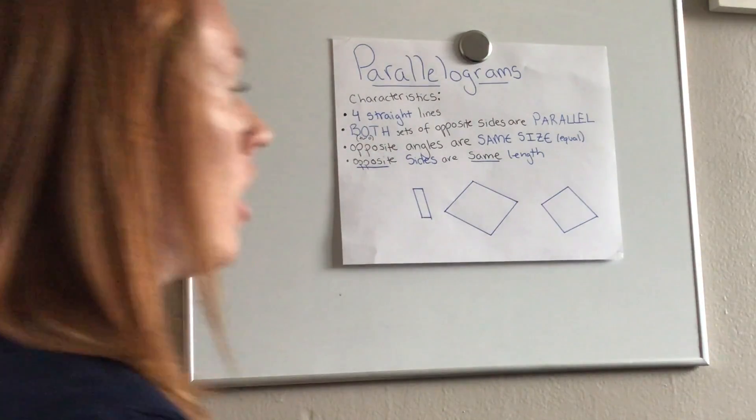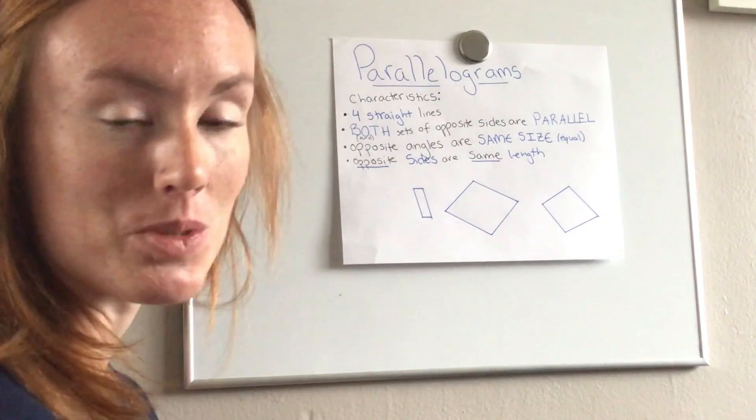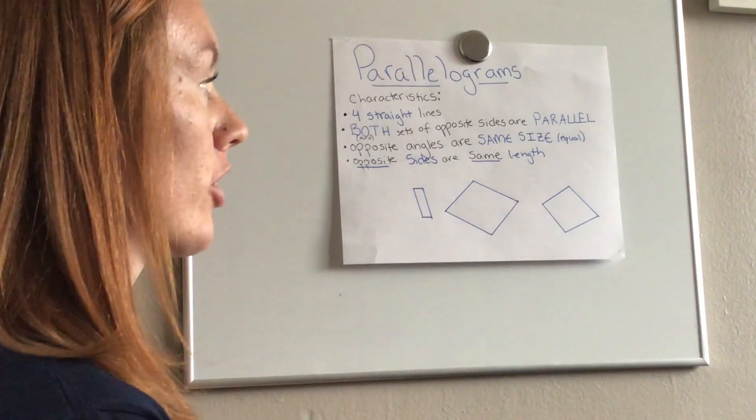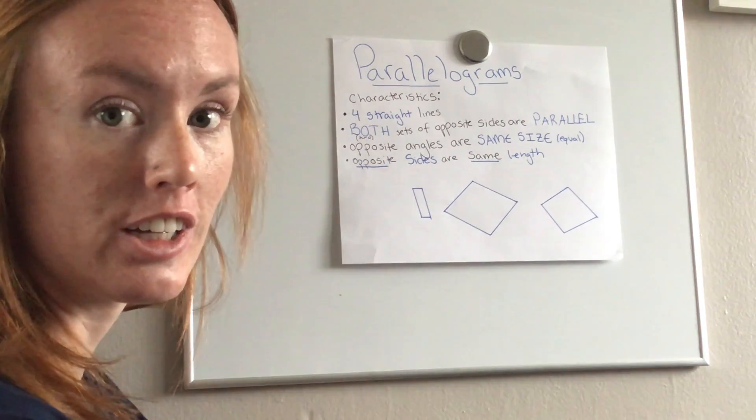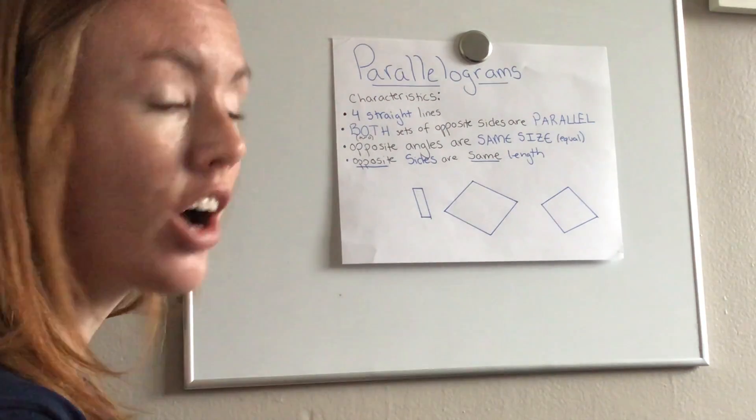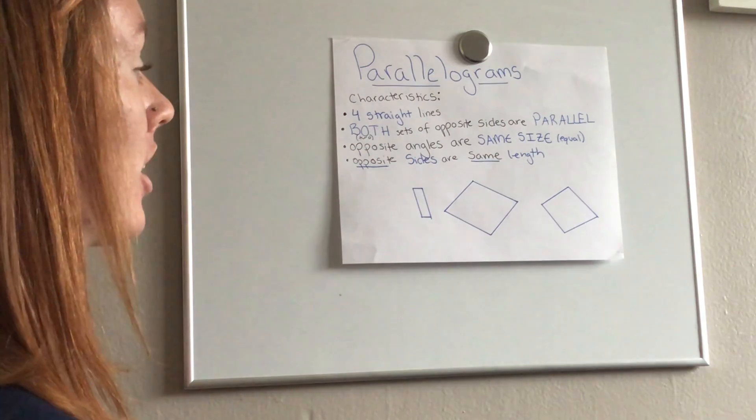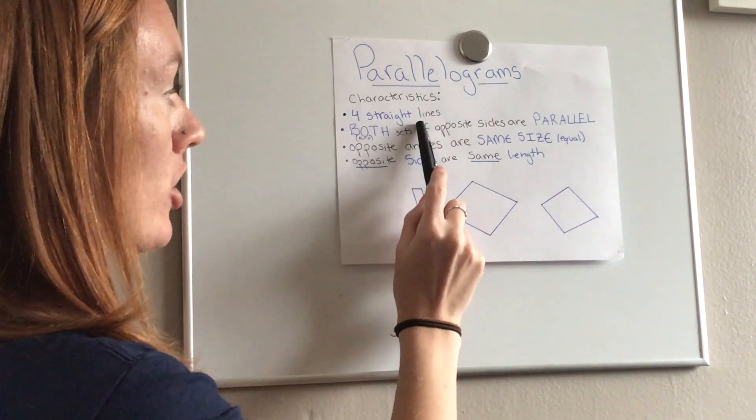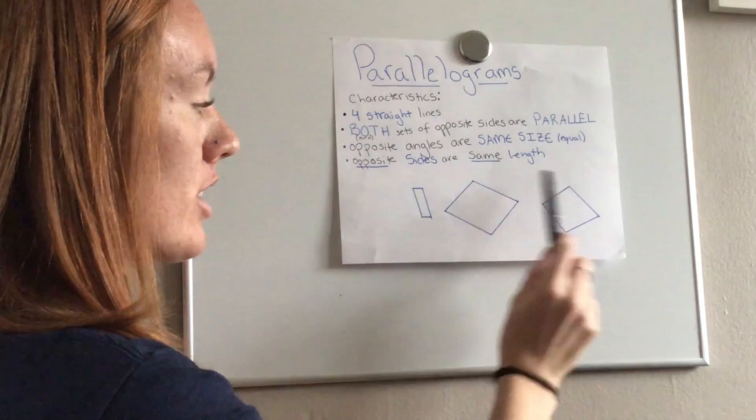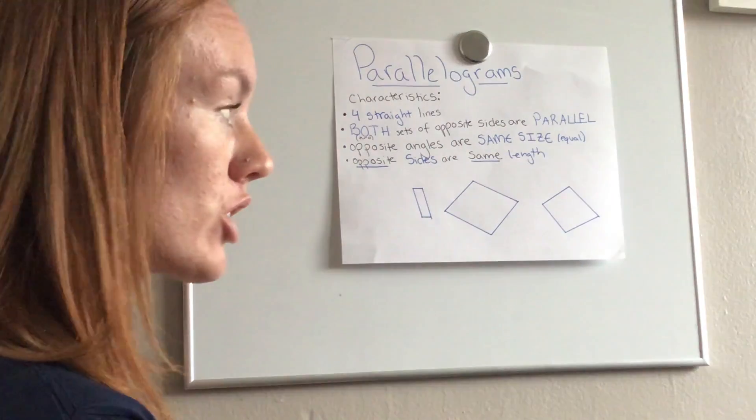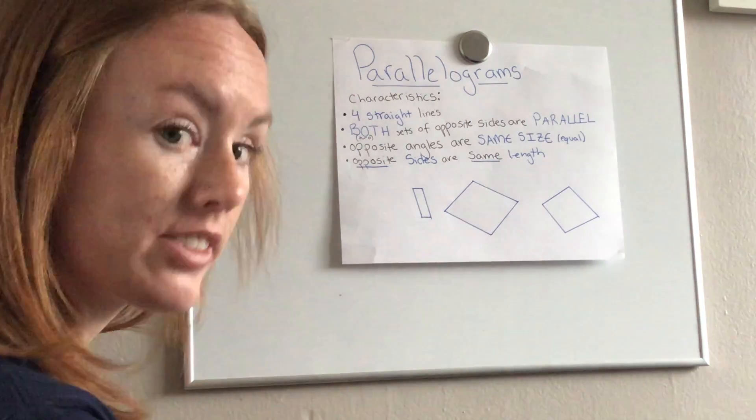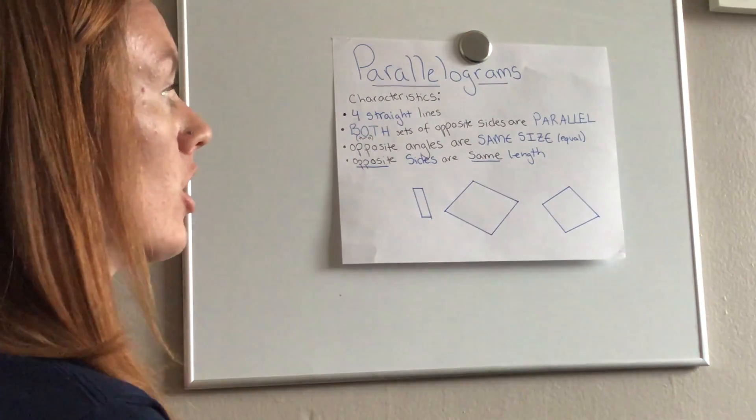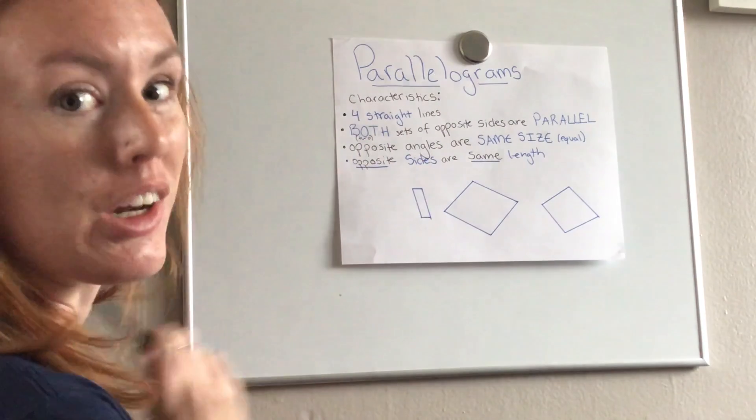So let's see which of these shapes are parallelograms and if they're not a parallelogram, what characteristic does it not have that makes it so it's not a parallelogram. Now my first characteristic is four straight lines. All of these have four straight lines, there is no curved line, no shape with three lines or shape with five lines. They're all four straight lines so every one is already meeting the characteristics.